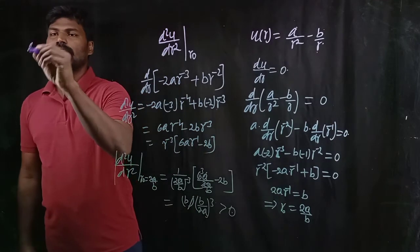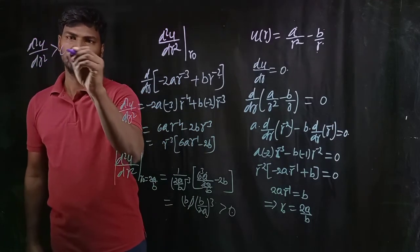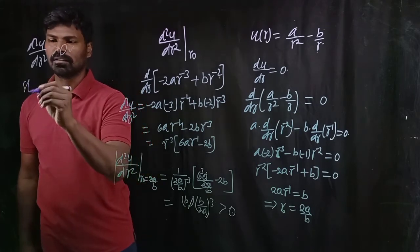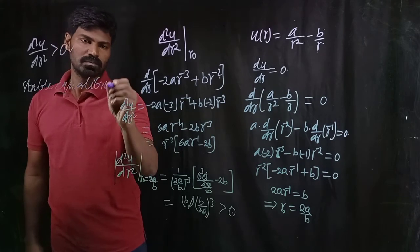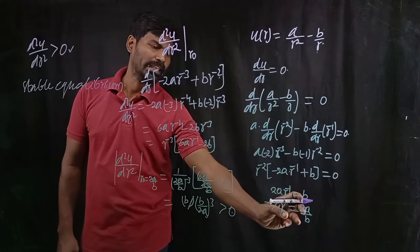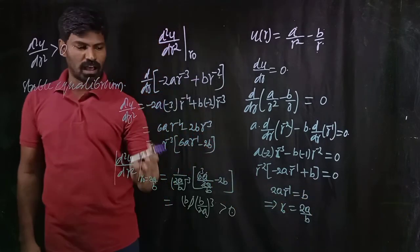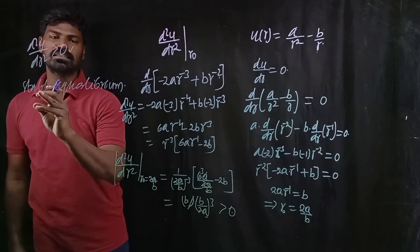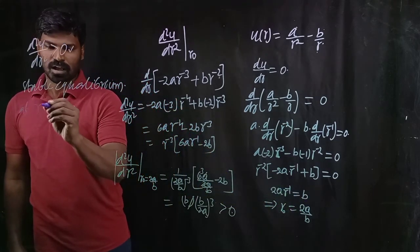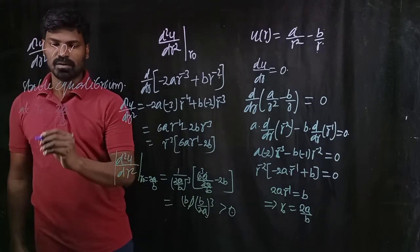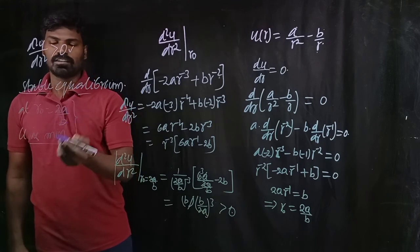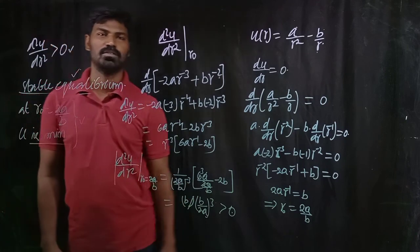So at R equals R naught, d²U/dR² is greater than zero. When d²U/dR² is greater than zero, it corresponds to stable equilibrium. So this point corresponds to stable equilibrium. For this given potential energy, we have an equilibrium point at R naught equals 2A/B, and this corresponds to stable equilibrium — or equivalently, to minimum potential energy. Whether the question asks for the point of minimum potential energy or stable equilibrium, the answer is the same: R naught equals 2A/B.